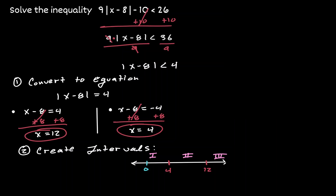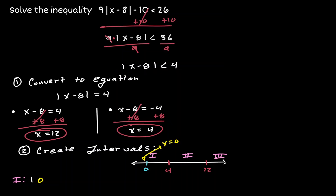Now we want to test each of those intervals. Let's start by testing interval 1. Let's choose a number less than 4 — I'm going to choose 0 — and plug it into the simplified inequality. On the left-hand side we get the absolute value of negative 8, which is 8. Is 8 less than 4? Definitely not. So the first interval is not going to be part of our solution.